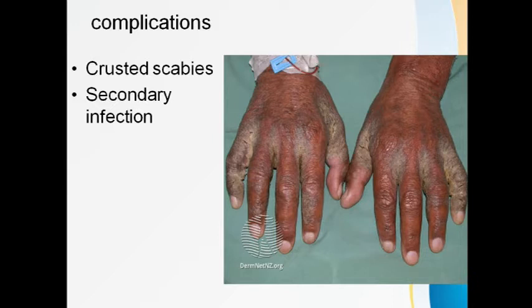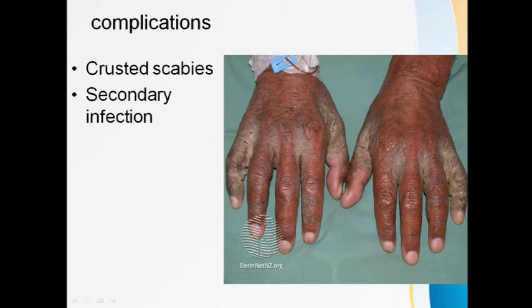Crusted scabies is mostly seen in mentally ill patients in asylums, chronically ill or neglected patients, roadside beggars, and immunocompromised patients such as those bedridden with HIV or uncontrolled diabetes. Millions of mites are present throughout the body. One characteristic finding in crusted scabies is the lack of severe itching — itching is not as severe as in typical scabies due to repeated hypersensitivity assaults leading to desensitization.